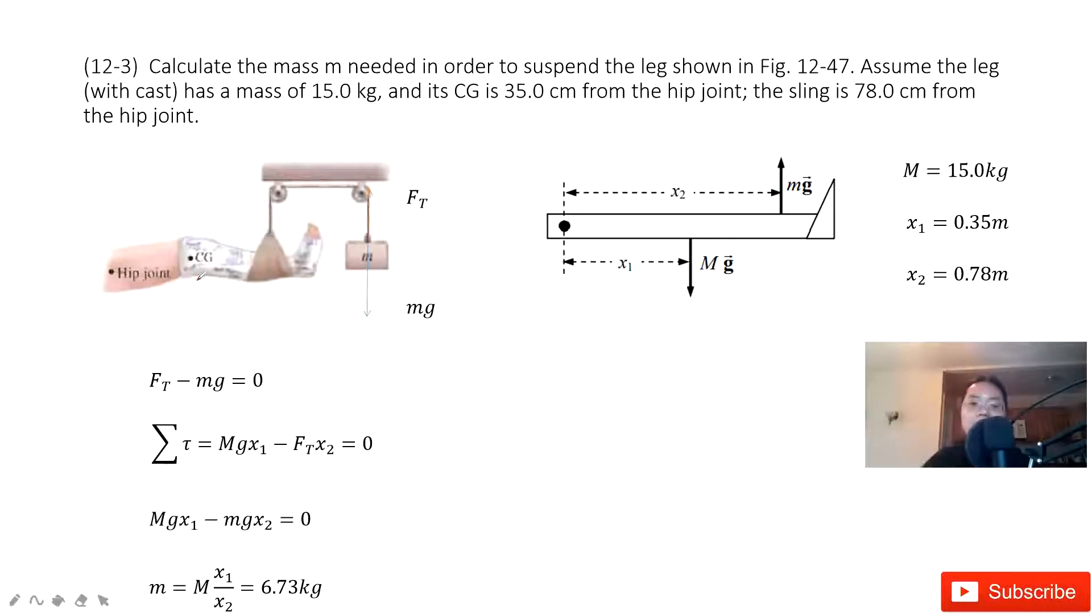Now let's look at the system. We have a leg and it has a tension. The tension from the string equals the small mass mg because they are static.